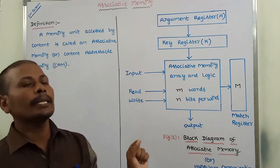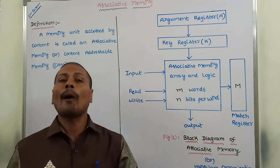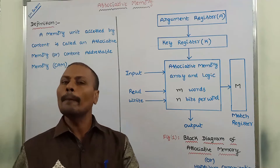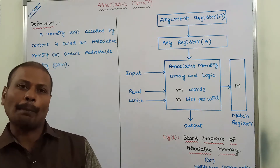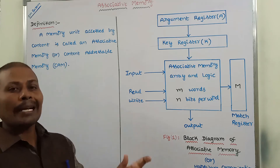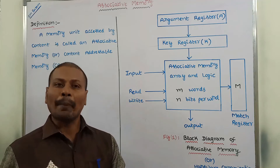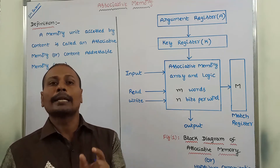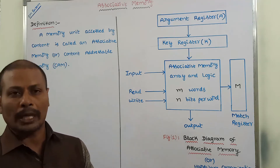Hence, we can say that associative memory can also be called as content addressable memory, denoted by CAM. This type of memory can be accessed simultaneously and in parallel based on the content only, rather than a specific address or a location.